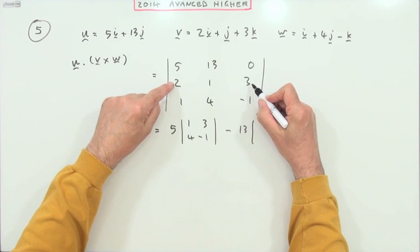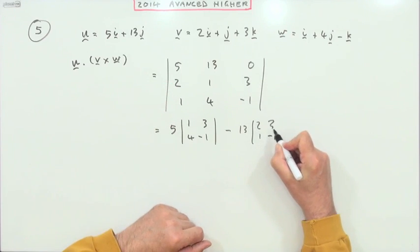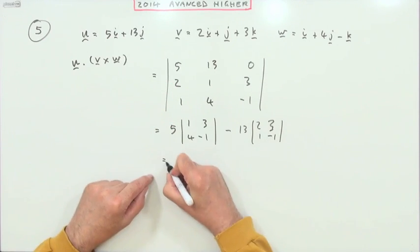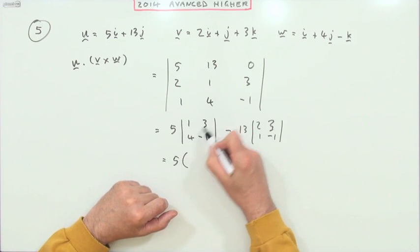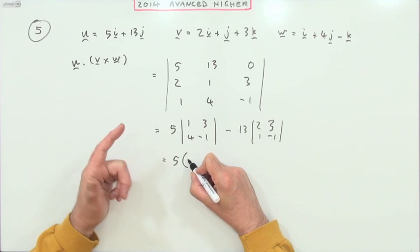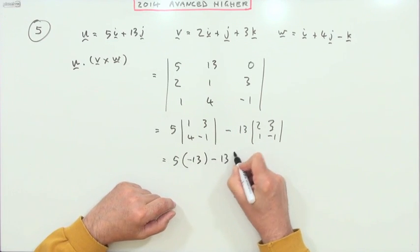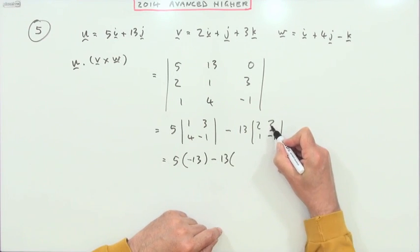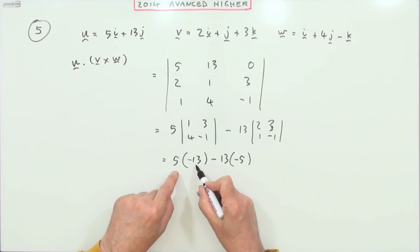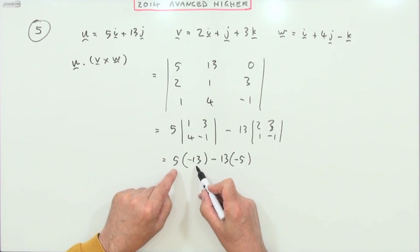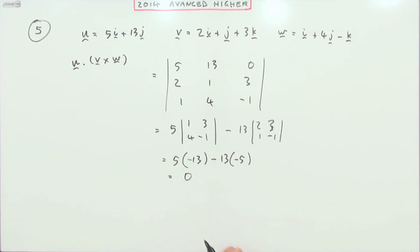Negative 13 times its minor, knocking out their own column, which is 2, 3, 1, negative 1. So that's going to be 5 times, now work out that little determinant, negative 1 take away 12, minus 13 times negative 2 take away 3. And that's negative, doesn't matter what they come to, it's the same factors: negative 5 times 13 plus 5 times 13 which is 0.